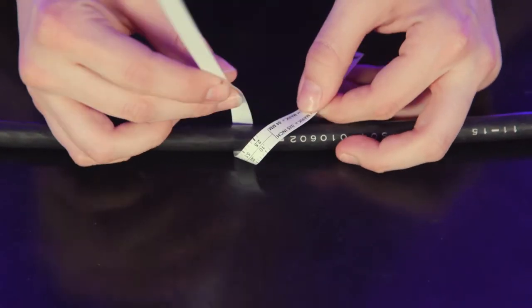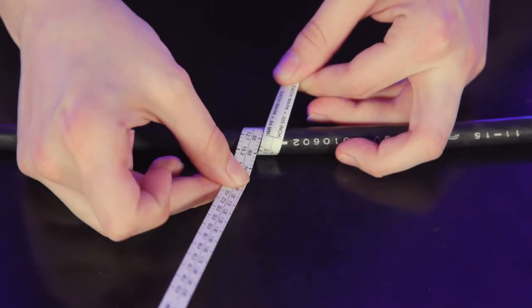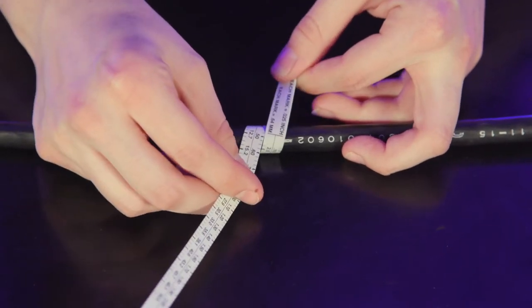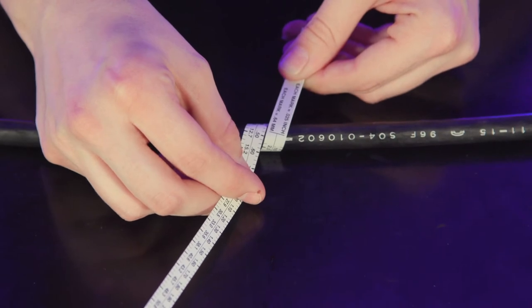I'm going to go ahead and wrap it around my cable. I want to make sure to pull this tight on my cable. When I pull it tight, I'm reading the top line in inches. It's about 0.48 inches in diameter.